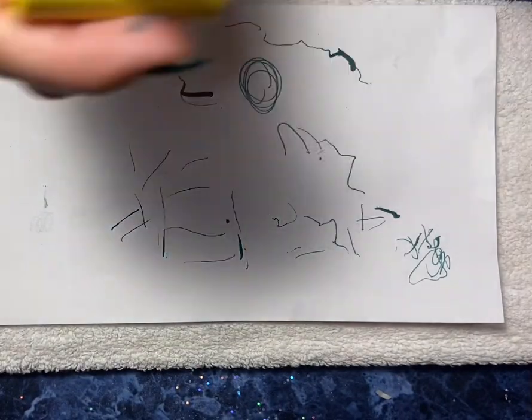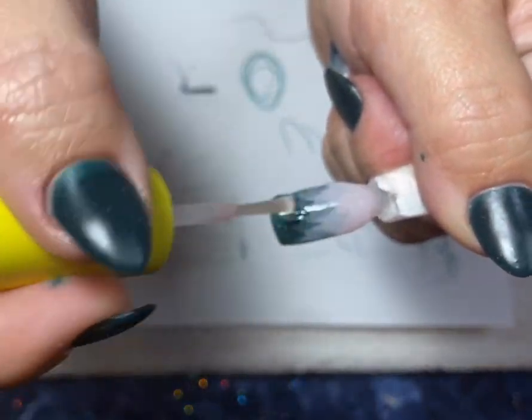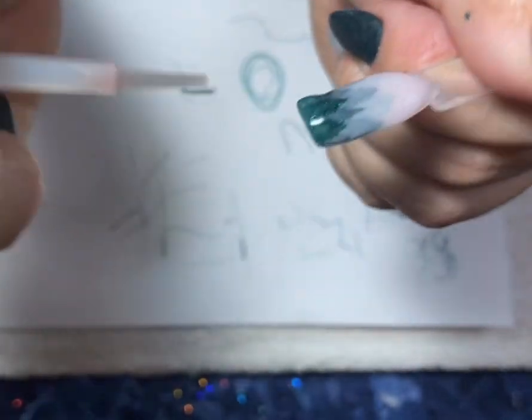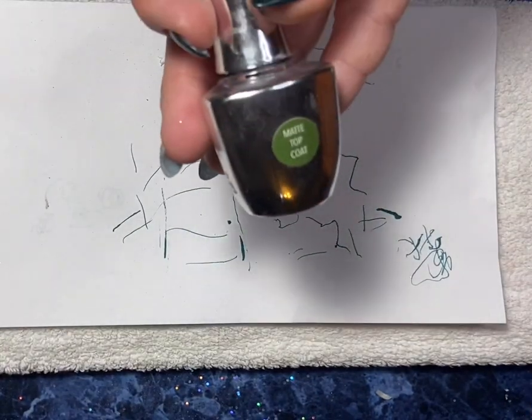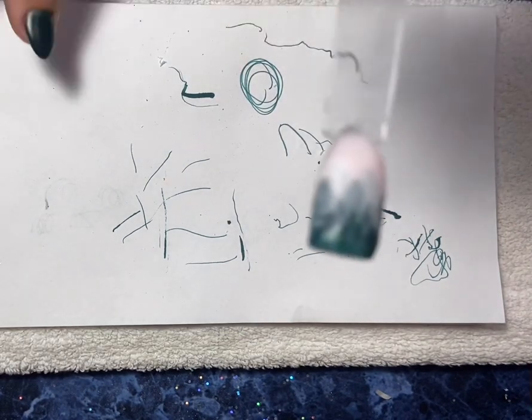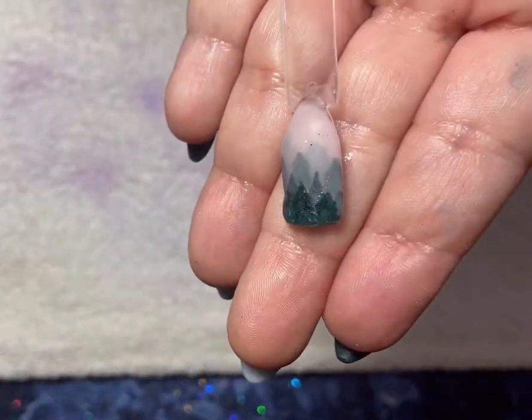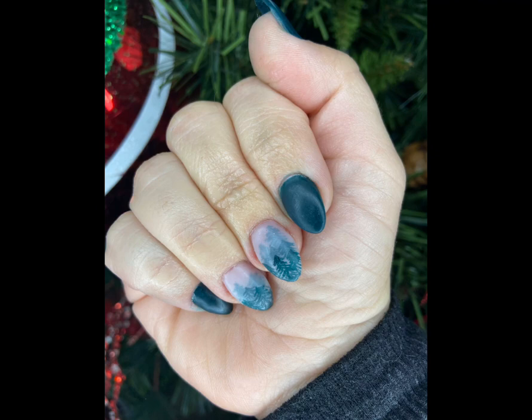After you're done buffing, you can go ahead and activate one more time. I used a matte top coat for these nail designs but if you want to do shiny you can do shiny as well. I have a matte gel top coat so I cured that for about 60 seconds and this was the final result. I hope this was helpful for getting some cute little misty foggy nails. Thanks for watching, bye!